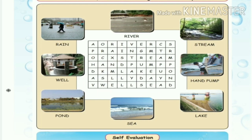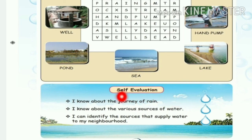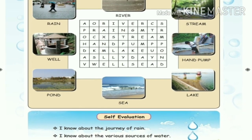Okay children, that's all. Now you know about the journey of rain, various sources of water, identifying sources, and how water is supplied. This is how we do the homework. We plan for the next classwork. Okay children.